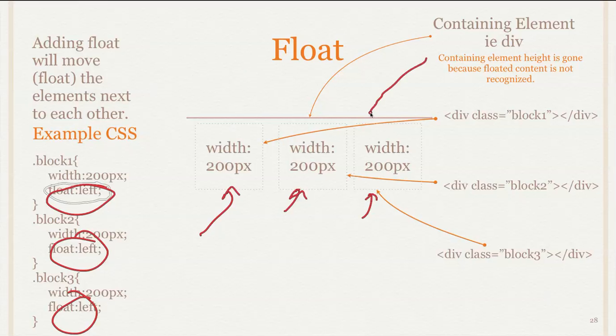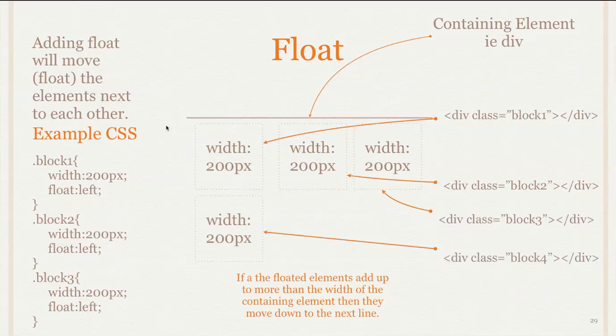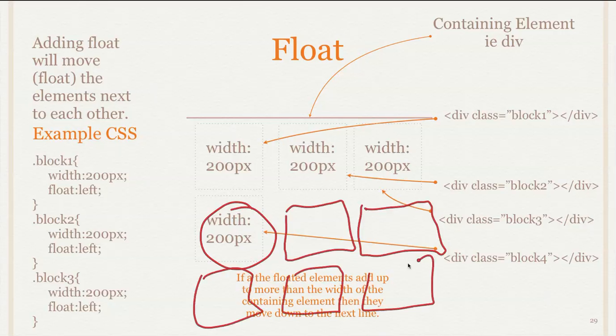So in order to float you need two things. You need a width defined and then you need the float property applied. And once we apply the float onto these then they move up next to each other. So now we have this float left applied to each one of these, and that moves them so that they're up next to each other. You'll notice here that the containing element now doesn't cover them. So one of the other things that happens when you float something is that the content now is not recognized by its containing elements.